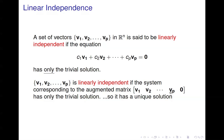Now, if the system has only the trivial solution, that means it has a unique solution — all the c's equal to zero is the only solution — so it has no free variables. The typical method of determining if a set of vectors is linearly independent is to stick them in the columns of a matrix, tack on the zero vector for the augmented column, and see if there are any free variables in that system.